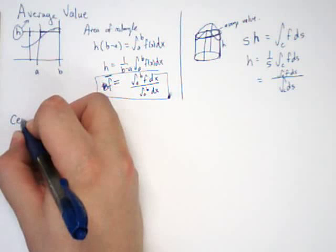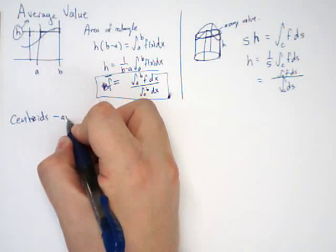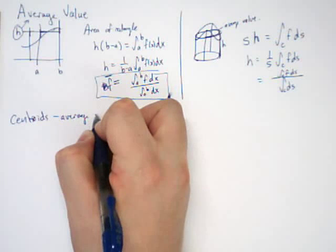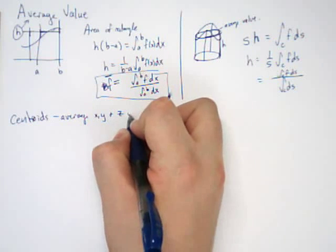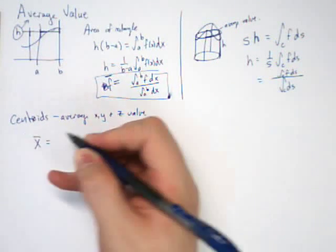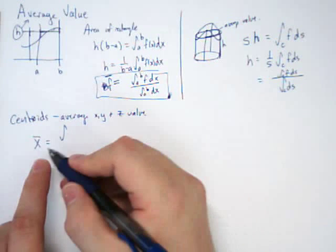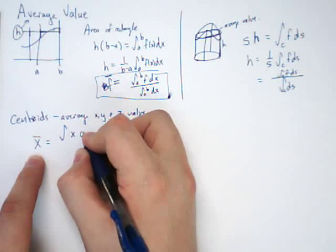So some examples. Centroids. This is essentially the average X, Y, and Z value. Well, if it's the average X value, then the average X value should be found by, if I want the average F value, I put an F in there. So if I want the average X value, I put an X in there. That's it.